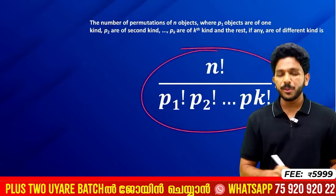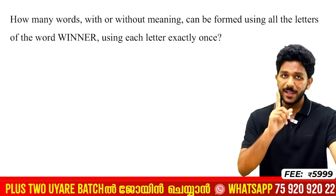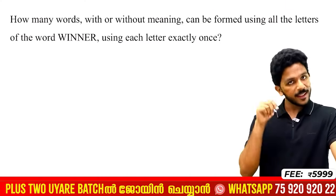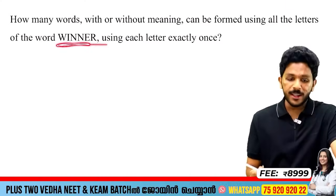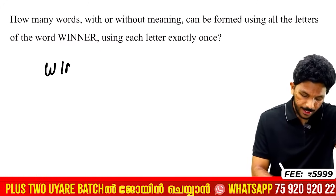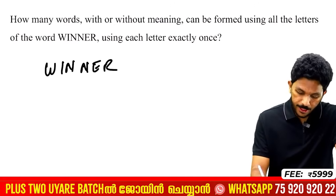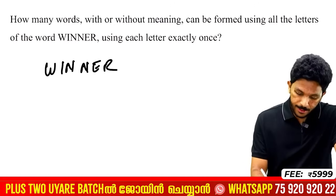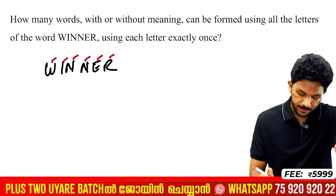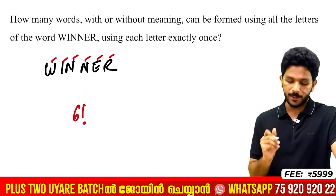Now I have a case with a repetition of letters. The word is WINNER. W, I, N, N, E, R. Here we have two N's repeated. The total number of letters is 6, so we start with 6 factorial.